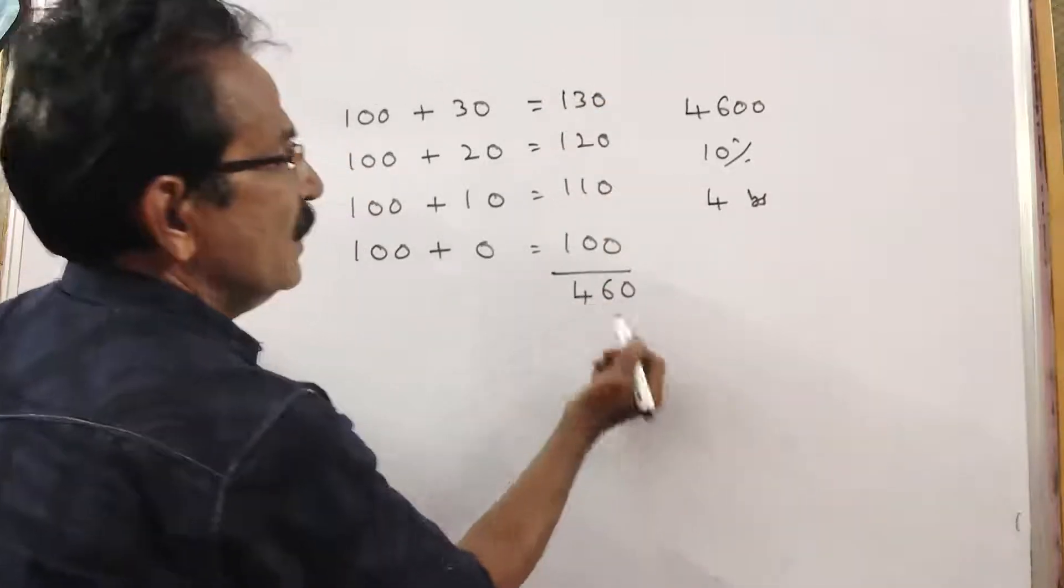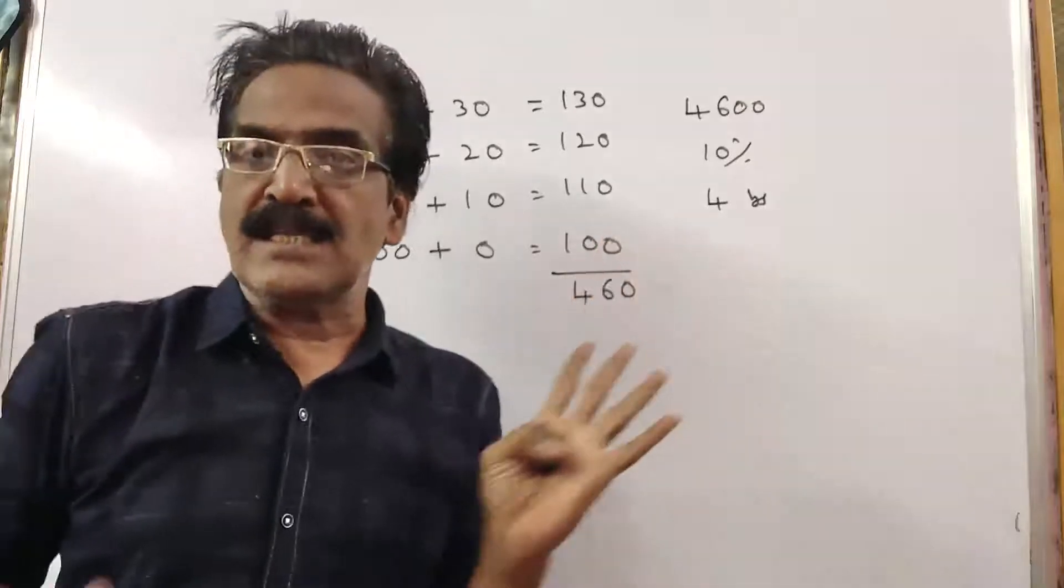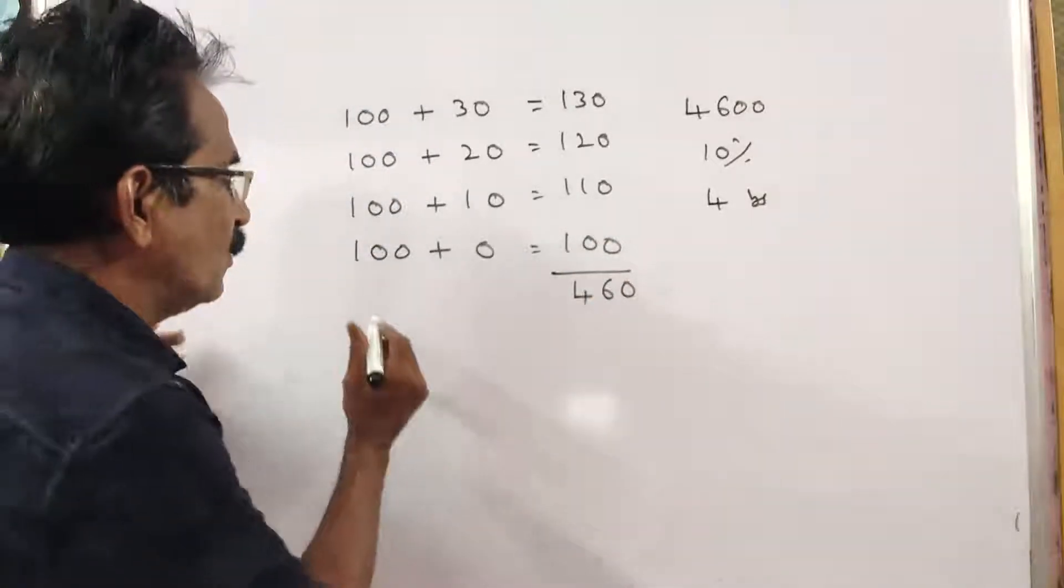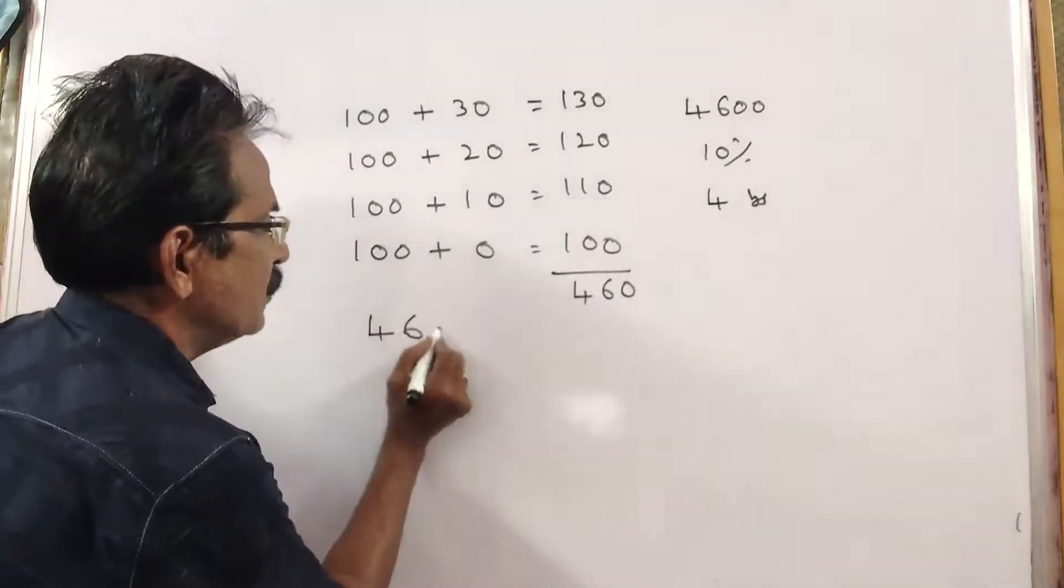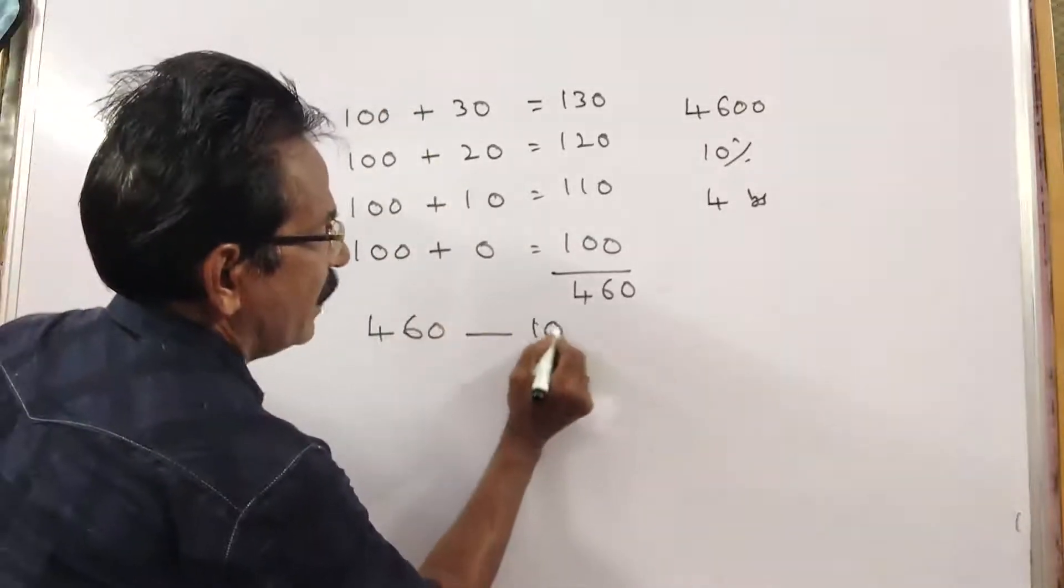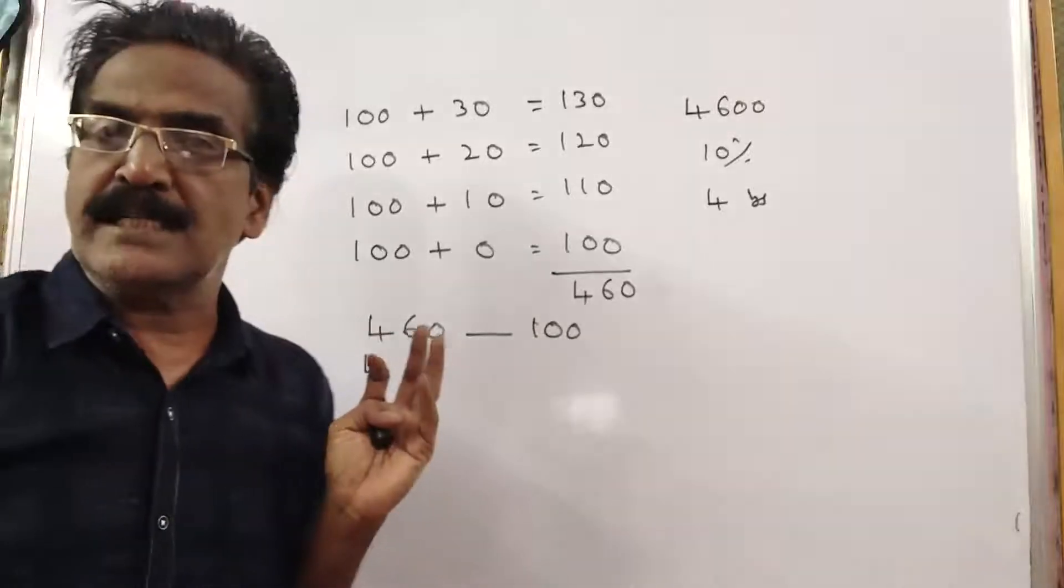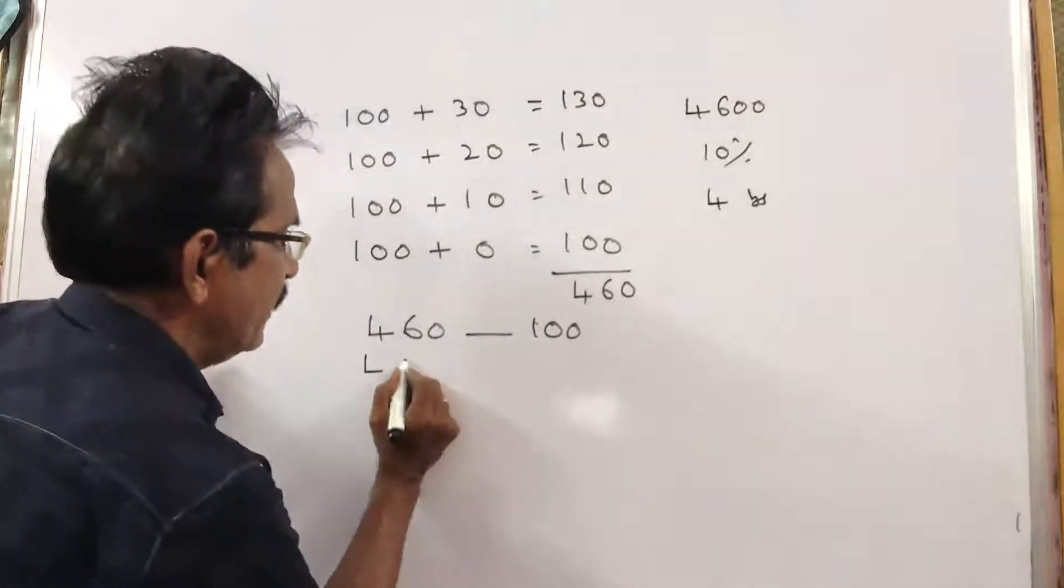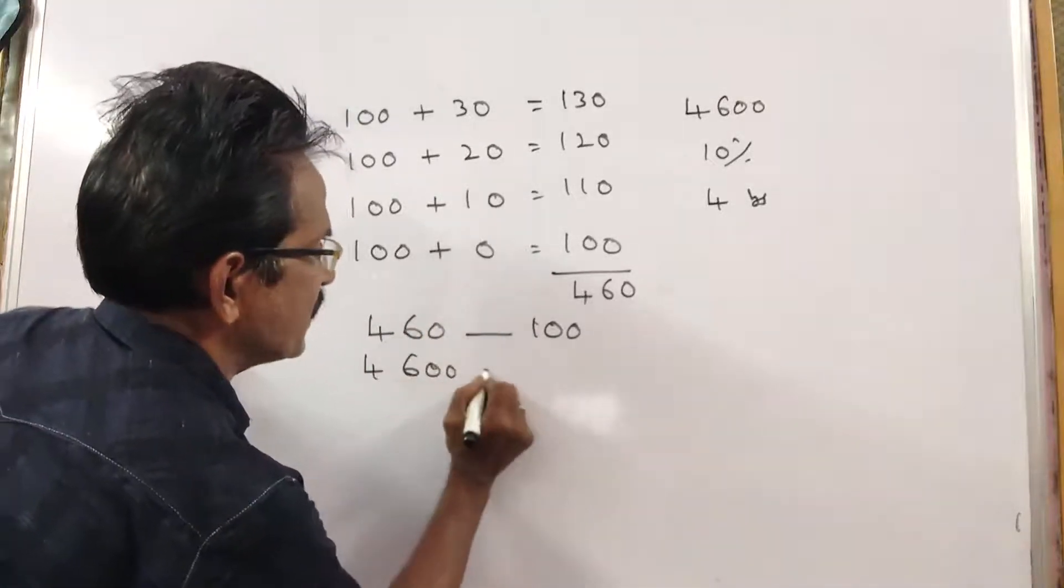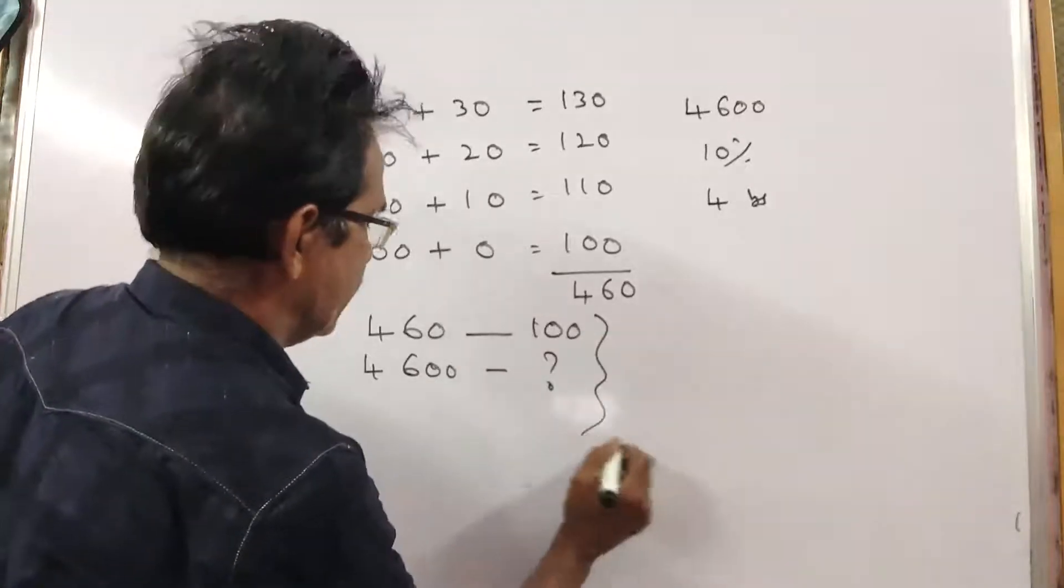So, if the total amount due is 460, the installment must be Rs. 100. If the total amount due is 4600, then what will be the installment?